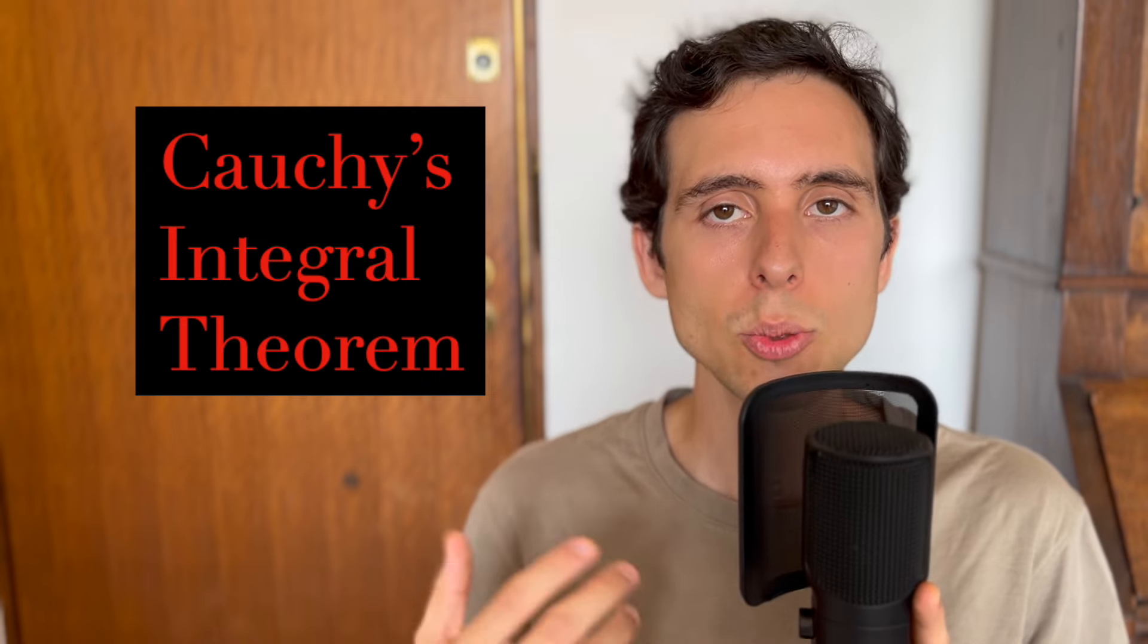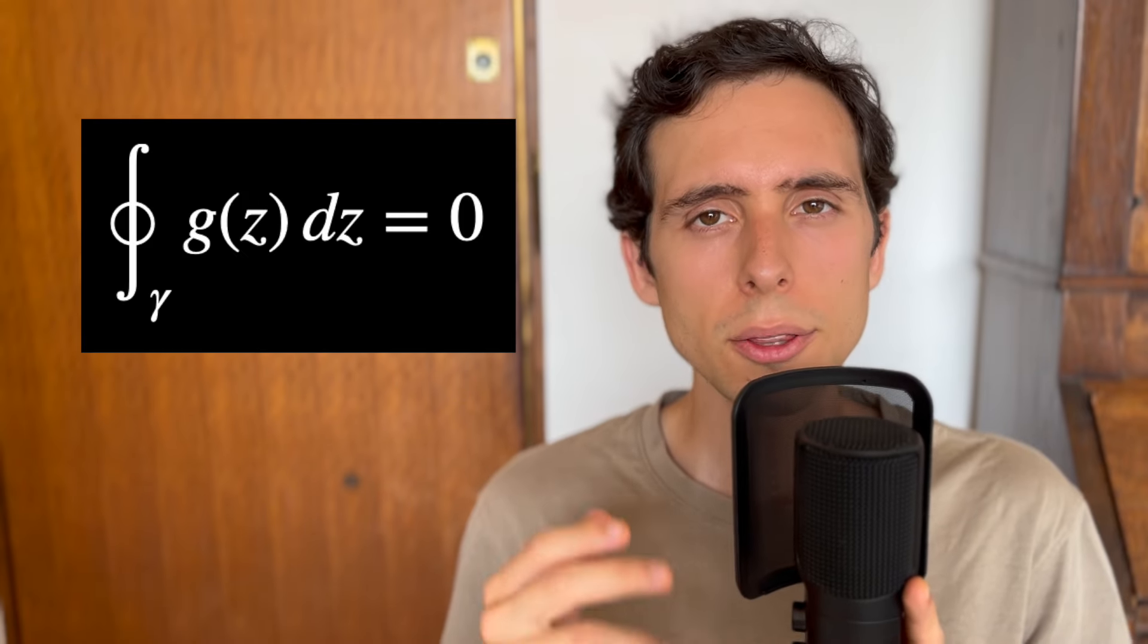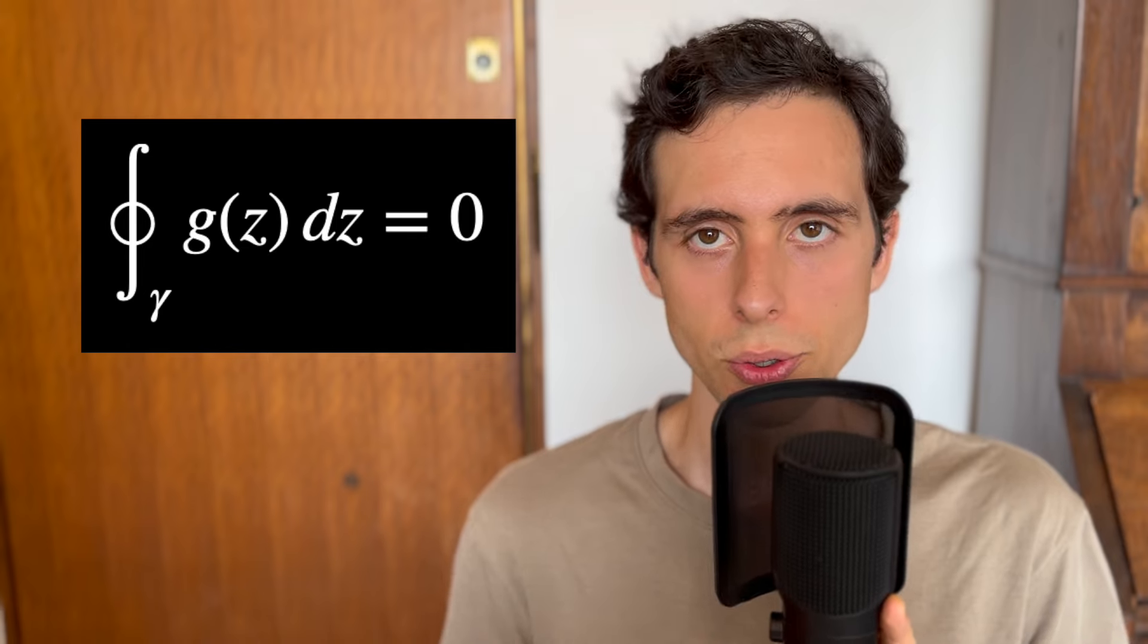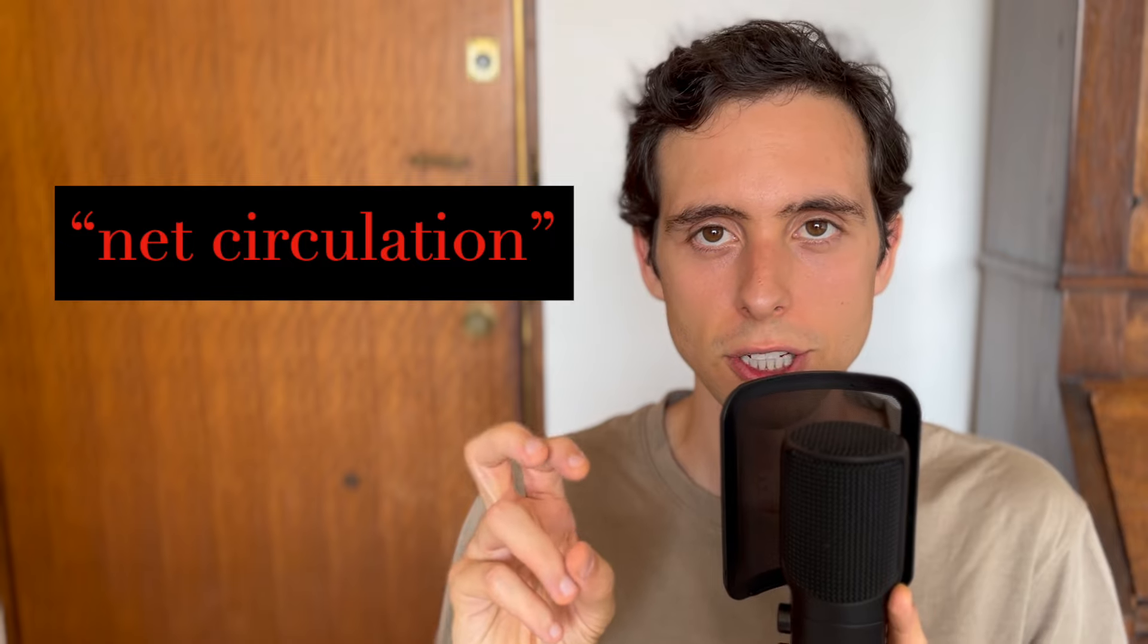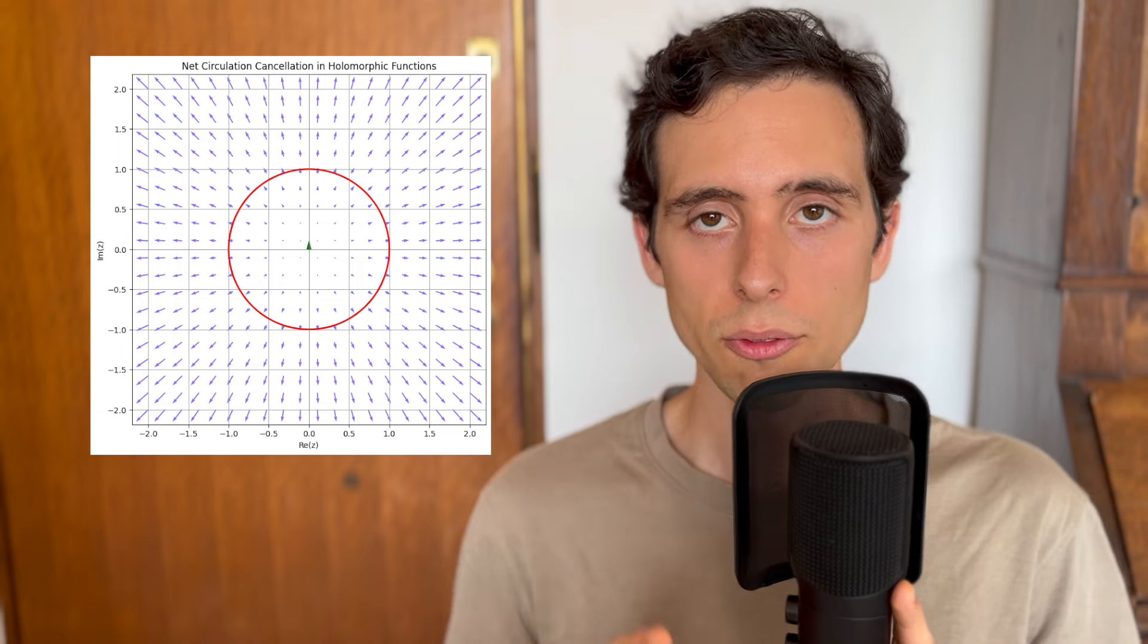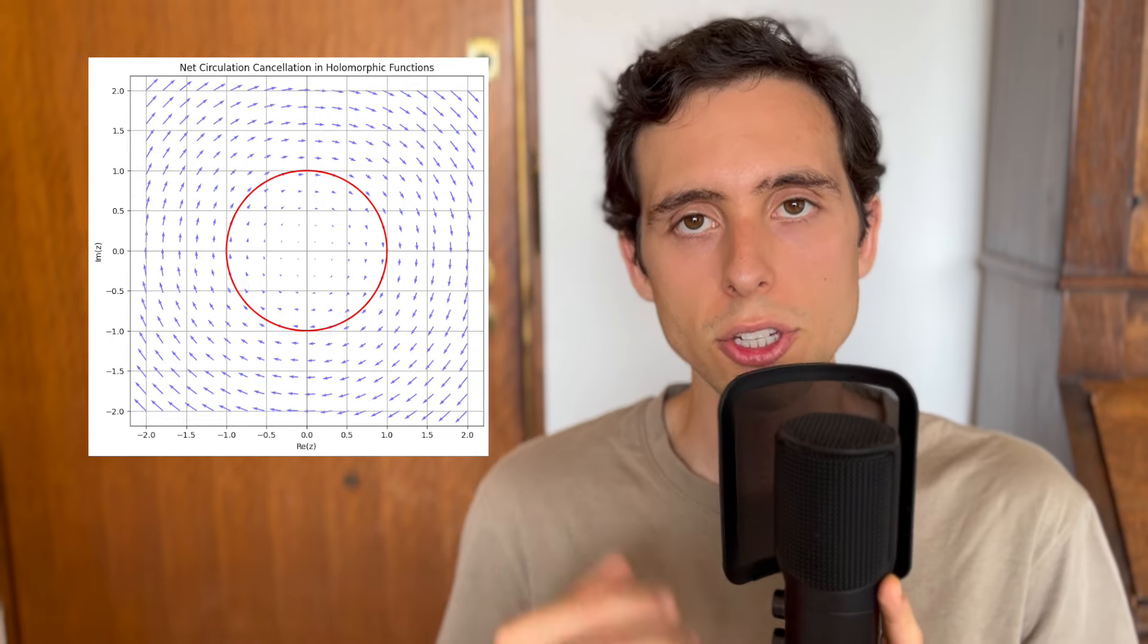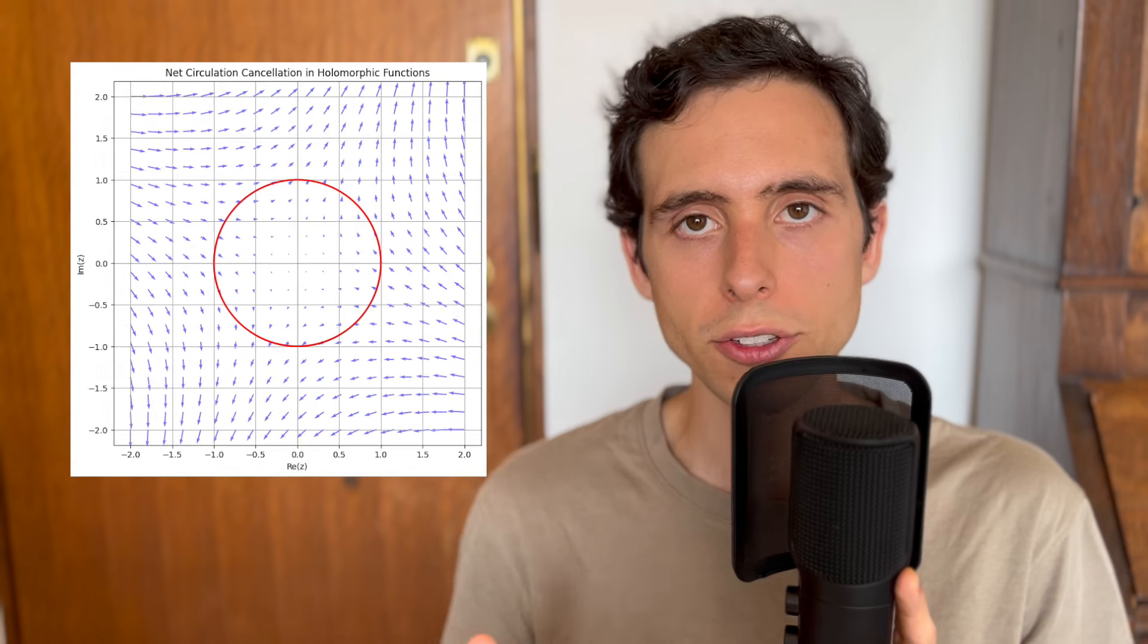Let me know in the comment section if you guys would like me to make a video proving it. It is a very standard result in complex analysis. Intuitively, you can think about it this way. This equation holds true because in the complex plane, holomorphic functions have no net circulation around closed orbits. This means that any contributions to the integral from one part of the curve are exactly cancelled out by contributions from other parts of the curve. Essentially, holomorphic functions are smooth and have no singularities within the path. So the values of the function balance out perfectly over the entire closed curve.